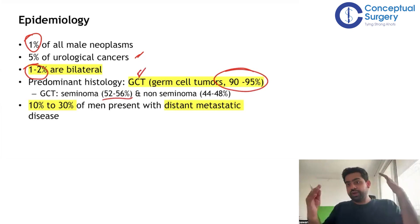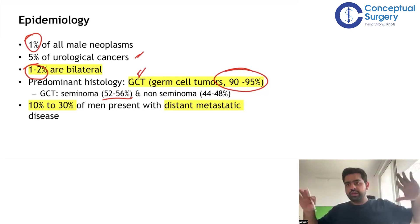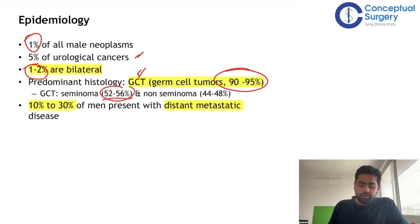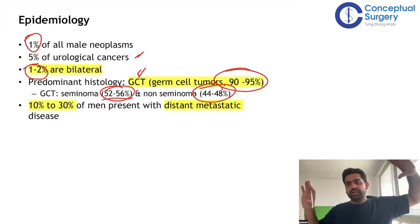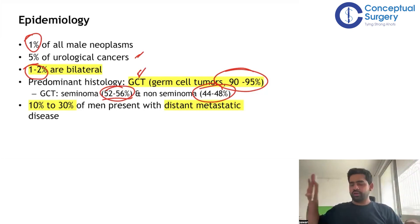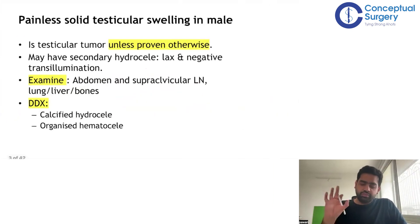The most common histological subtype is the germ cell tumor, constituting around 90 to 95% of testicular malignancies. Germ cell malignancies are divided into seminomatous and non-seminomatous. Out of all germ cell malignancies, seminoma constitutes around 52 to 56%, and non-seminomatous around 44 to 48%. Around 20 to 25% of men may come to you with distant metastasis at presentation.